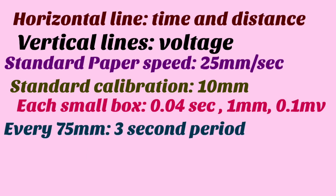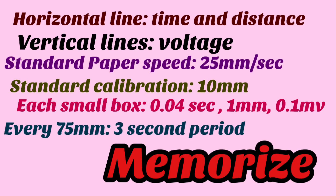Here are the key points to memorize for rhythm interpretation: the horizontal line represents time, the vertical line represents voltage, standard paper speed is 25 millimeters per second, and standard calibration is 10 millimeters. Each small box is 0.04 seconds, one millimeter, and 0.1 millivolt. Every 75 millimeters is a three-second period, or 15 large squares.